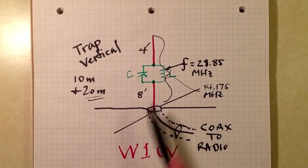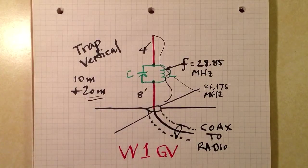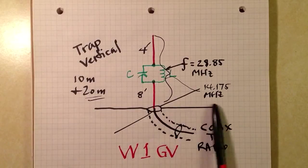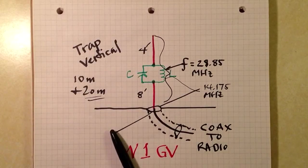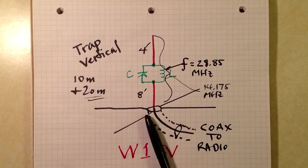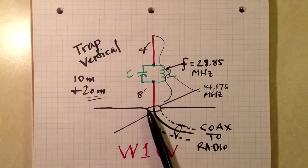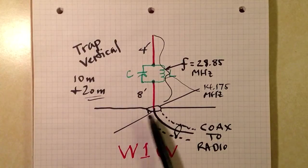You might want to droop these radials or if you mount the thing directly on the ground, you might want to have more than four of them. Maybe a hundred of them, a quarter of a wavelength long each on the lowest frequency band that you plan to use. There's another thing that you can do too.